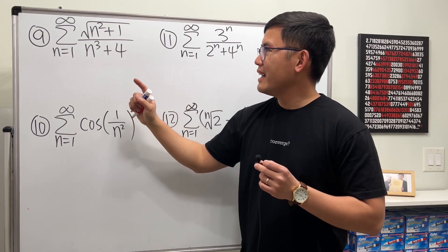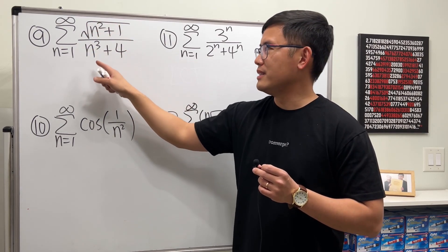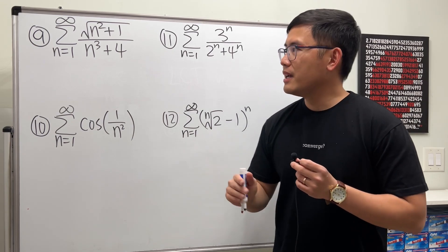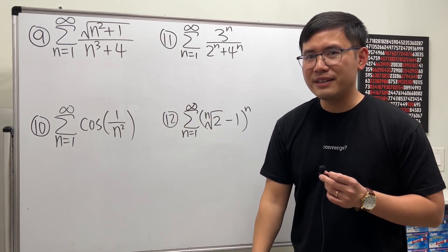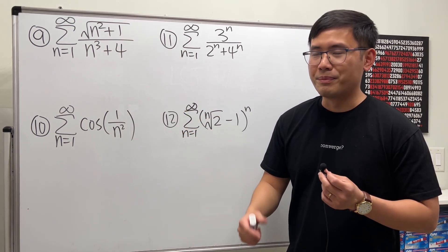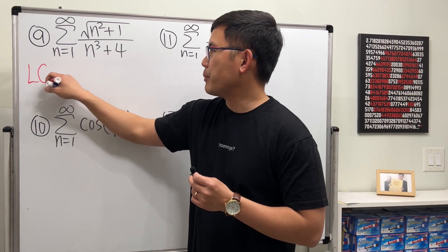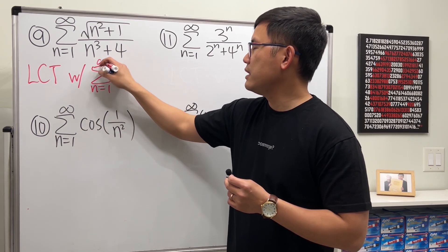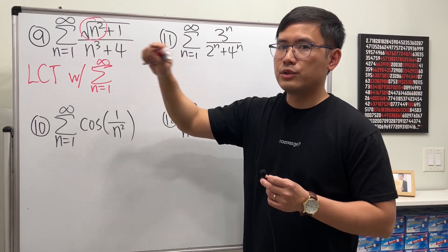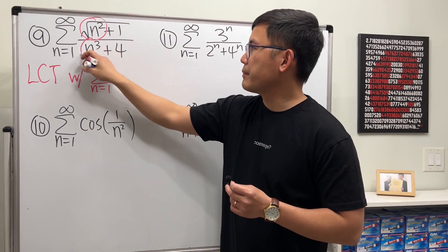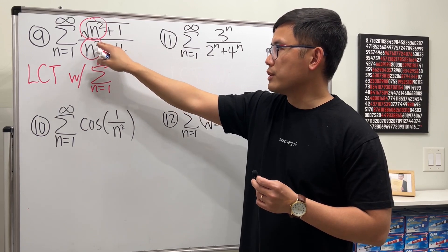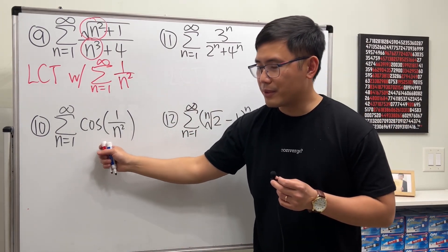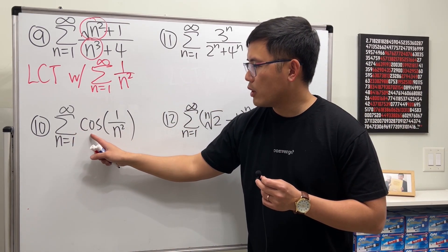Number nine involves a fraction with an nth power and n³ in the denominator. Pick up the dominating parts and make a comparison. Because the expression is complicated, the Limit Comparison Test works better. Compare with the series of n¹/n³ = 1/n², picking up the dominant terms from numerator and denominator.